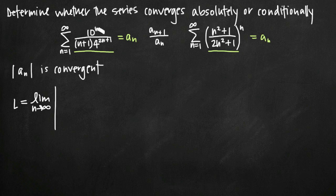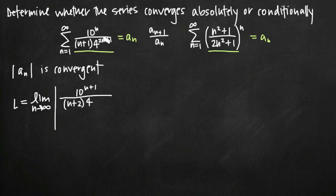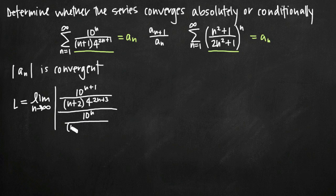We're going to substitute n plus 1 everywhere we have n in our original series. So instead of 10 to the n, we get 10 to the n plus 1. In the denominator, instead of n plus 1, we substitute to get n plus 2. And for the 4 term, 2 times n plus 1 gives 2n plus 2, plus 1 gives 2n plus 3, so we get 4 raised to the 2n plus 3. Then we divide by the original series a sub n.